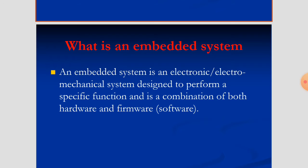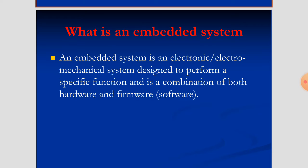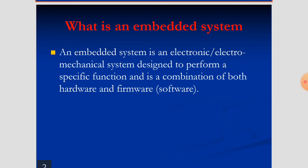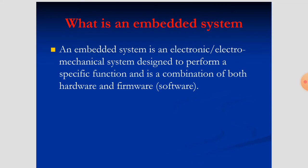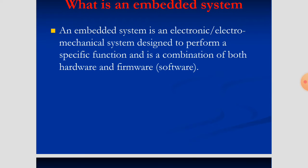Now we will start with the definition of embedded systems. An embedded system is an electromechanical system designed to perform specific functions. It is a combination of both hardware and firmware — firmware is nothing but software. It is going to perform both electrical and electromechanical functions, meaning it has different motors to run different operations. You can see the washing machine: it has electrical, electronic, and electromechanical functions, which is why it's called an electromechanical system.